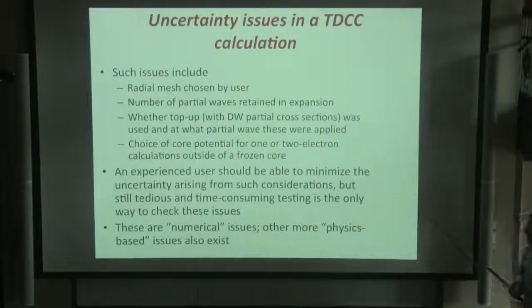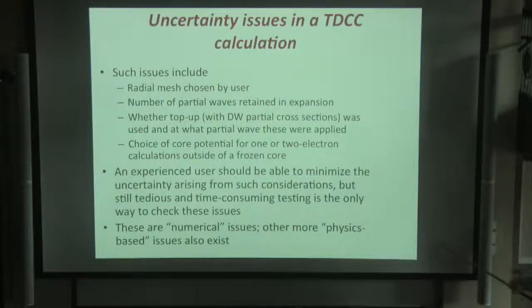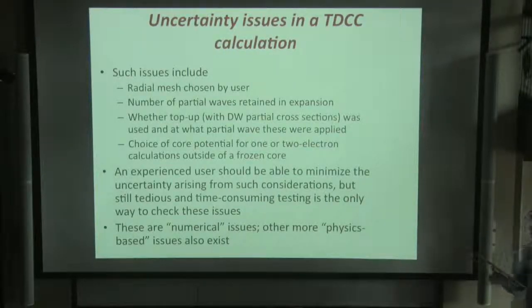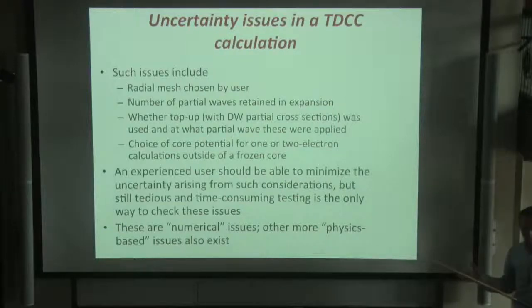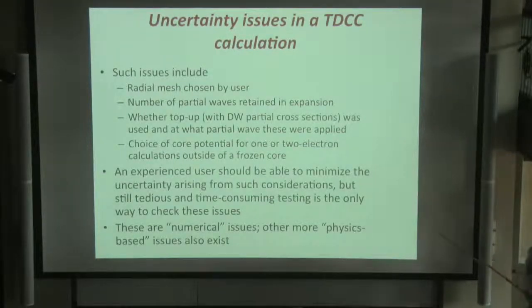Whether top-up with distorted wave cross-sections is used, and at what partial wave these are applied, matters significantly. In early TDCC calculations, the TDCC cross-section per partial wave was significantly different from the distorted wave for low L values (0, 1, 2, 3), but once you get up to higher L (8, 9, 10), distorted wave cross-sections were in pretty good agreement. One therefore tops up with distorted wave cross-sections for high L — say from L equals 10 through 50. With large computers this is less of an issue today, but older calculations might still warrant consideration.